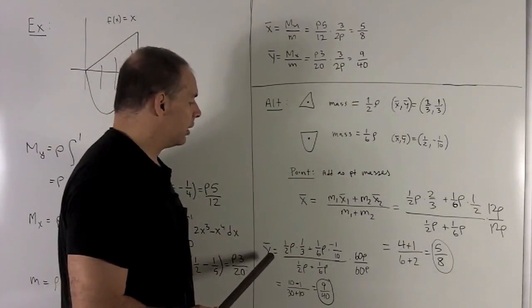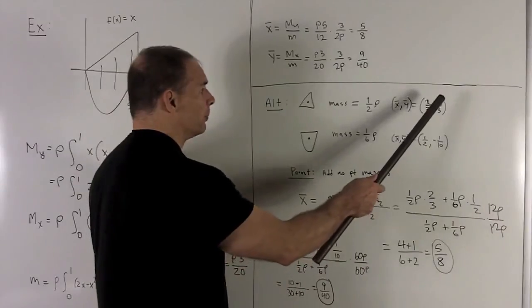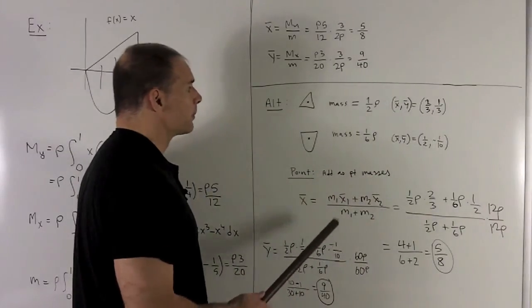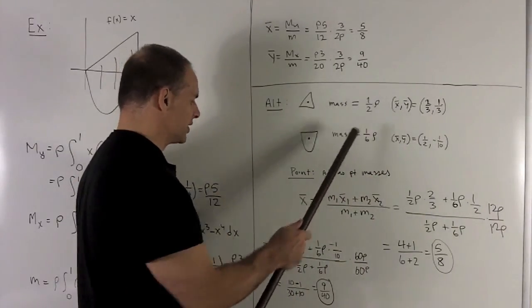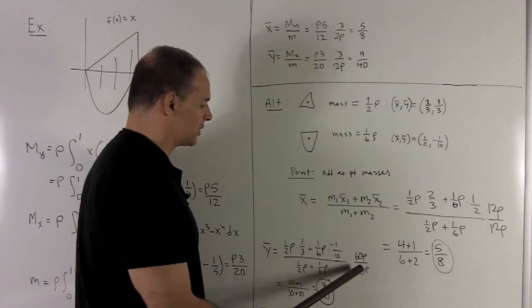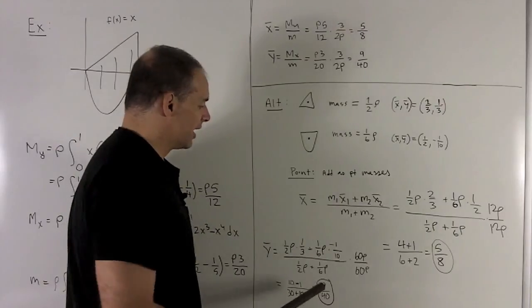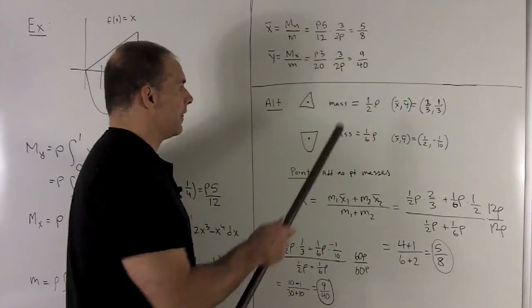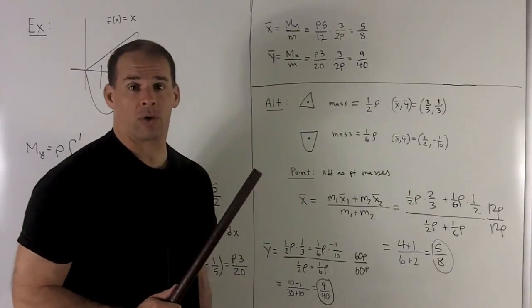For the y-bar, same idea. We take out the y-values, the one-third and the minus a tenth. Our masses are a half rho and a sixth rho. We put them in there. I can clean this up by multiplying by 60 rho over 60 rho, and then you notice 9-fortieths comes out, and that was what we got with our original answer too.